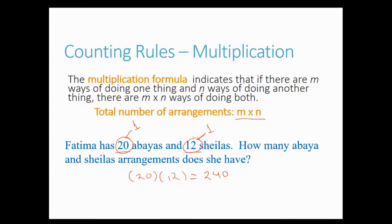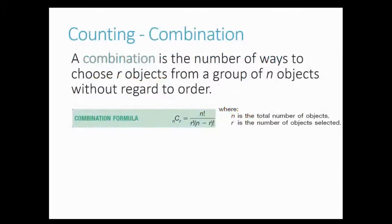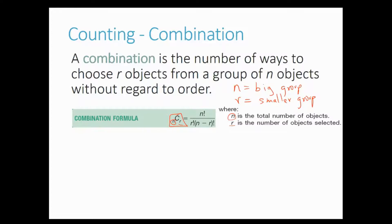She had two groups — a group of abayas and a group of shaylas — and she's choosing one from each. Now, combination: a combination is the number of ways to choose r objects from a group of n objects without regard to order. The formula is nCr, where n is the total number of objects and r is the number of objects selected.